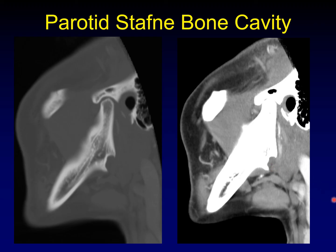The sublingual and parotid versions are much less common than the submandibular version, and they are sometimes given unusual names like anterior lingual mandibular salivary gland defect. Rather than that mouthful, I think it's easier to refer to them as Stafne bone cavities prefixed by the gland in question — so a sublingual Stafne bone cavity or a parotid Stafne bone cavity.